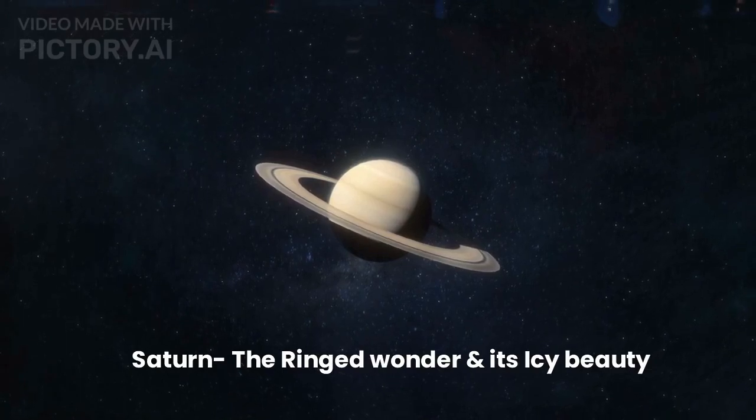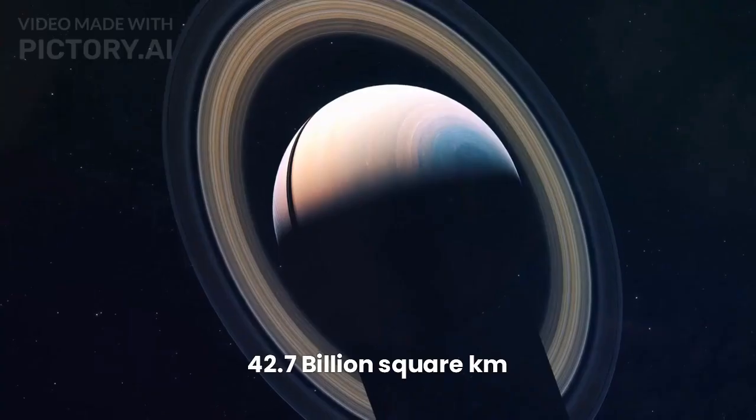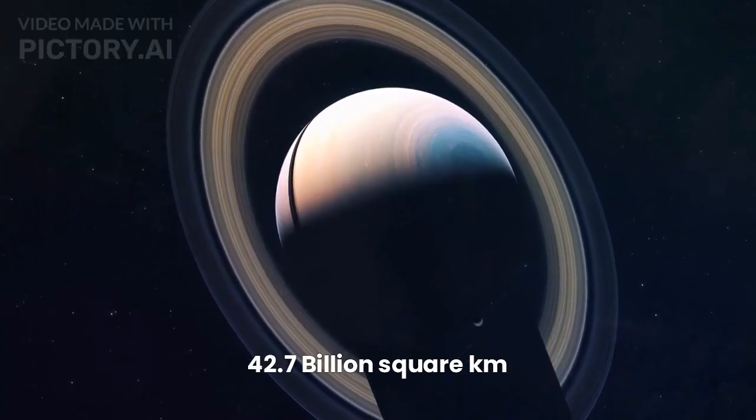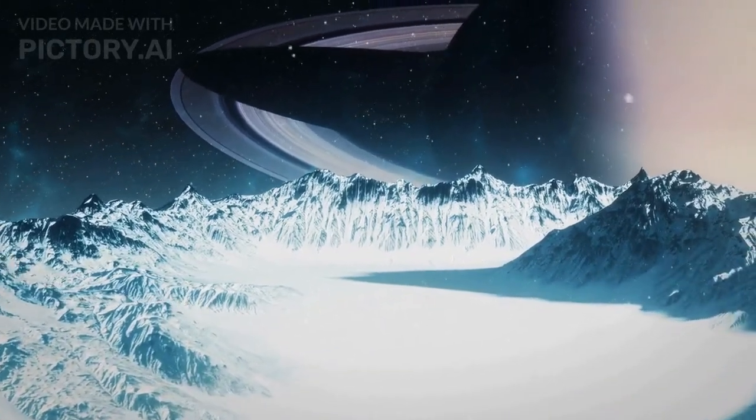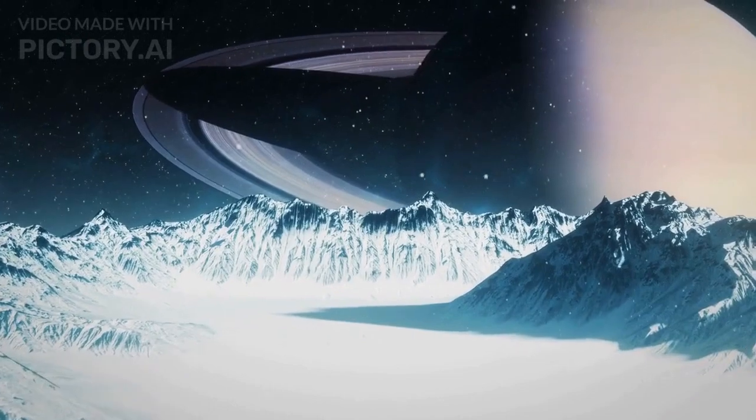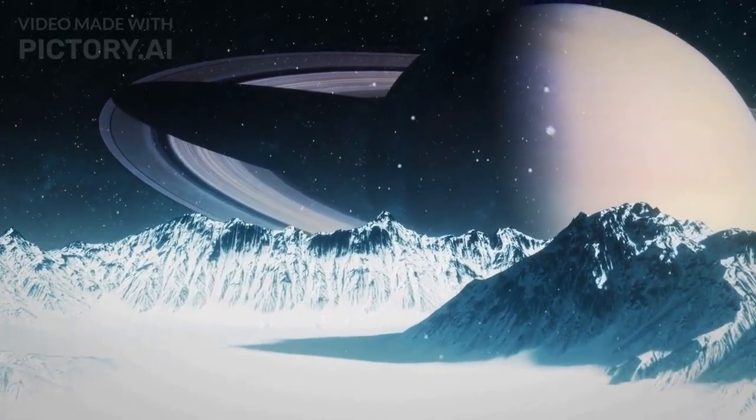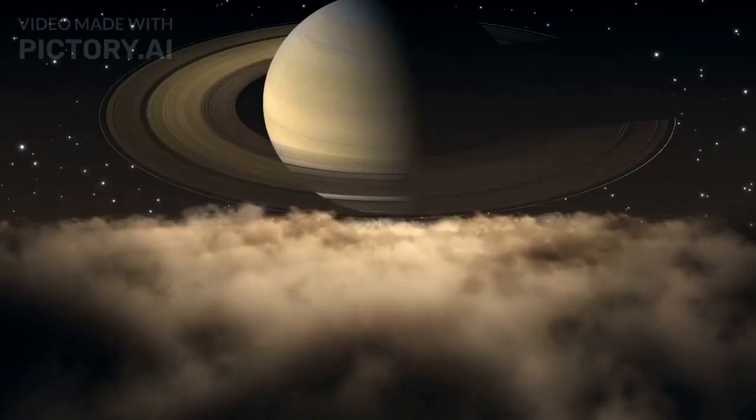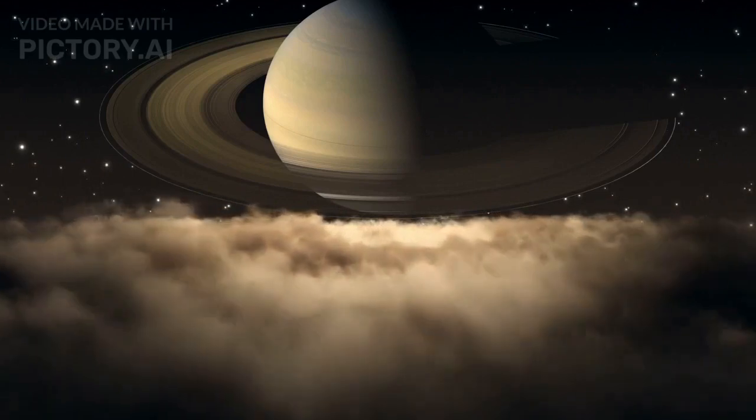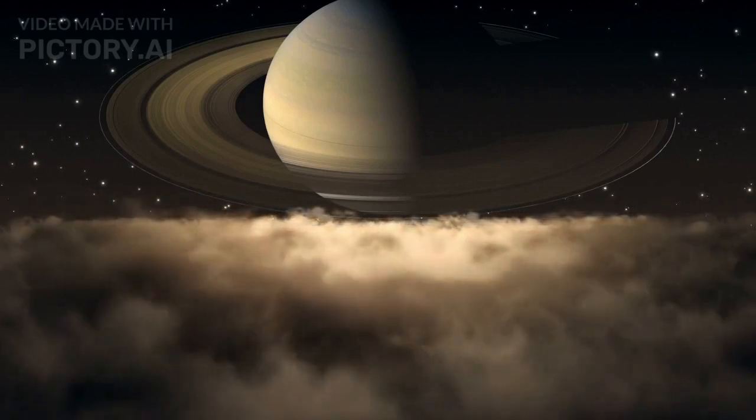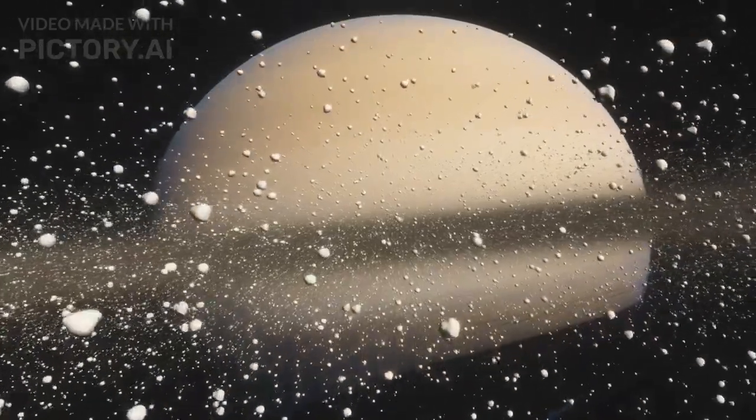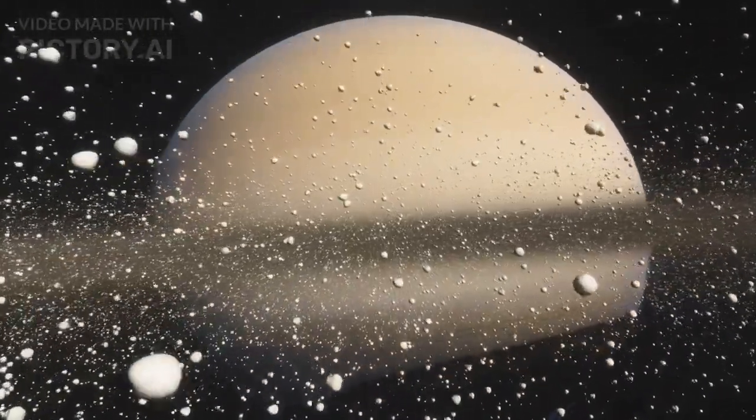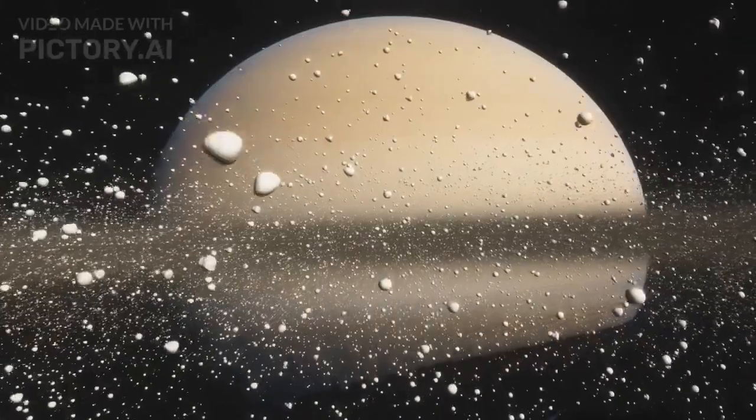Sixth, Saturn the ringed wonder and its icy beauty. The surface area of Saturn is 42.7 billion square kilometers. Saturn's iconic rings are composed of countless icy particles, making it a dazzling sight in the night sky. The Cassini spacecraft unveiled the intricate details of these rings, showcasing their gaps, divisions, and even moonlets. Beyond its rings, Saturn boasts a rich collection of moons, each with its own intriguing features.